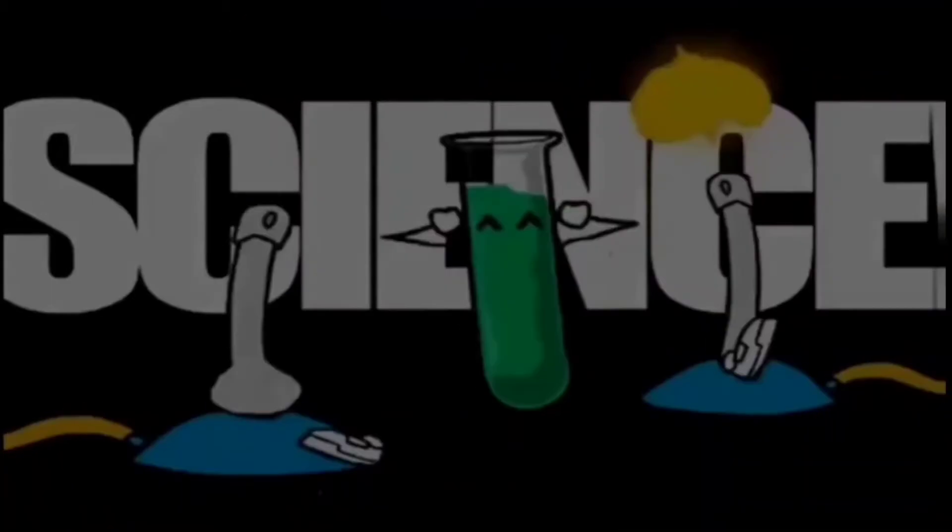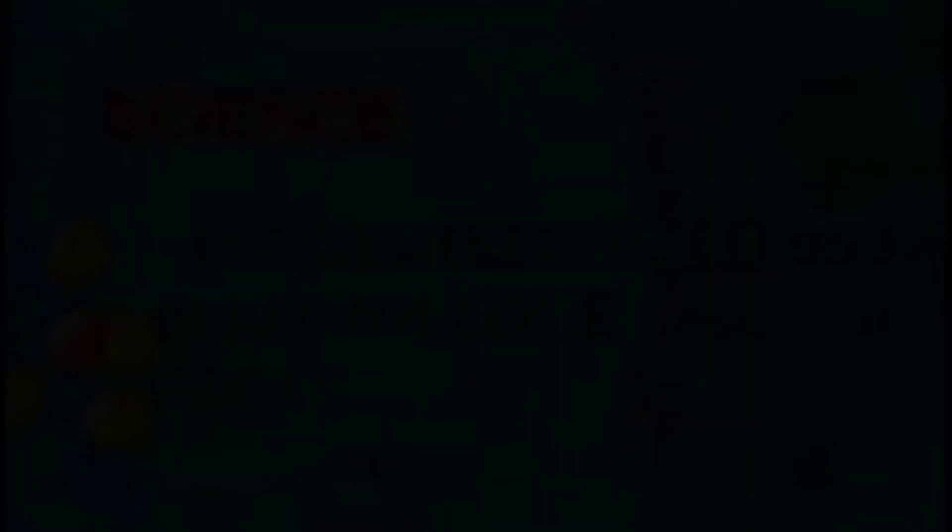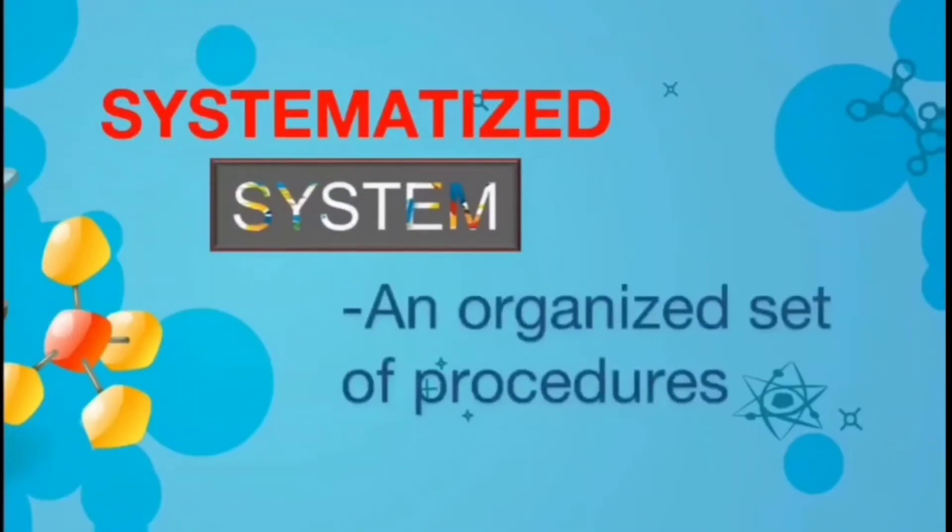Science is defined as the systematized body of knowledge based on facts. It is an organized way of studying things and finding answers to problems. The word systematized comes from the root word system, which means an organized set of procedures.